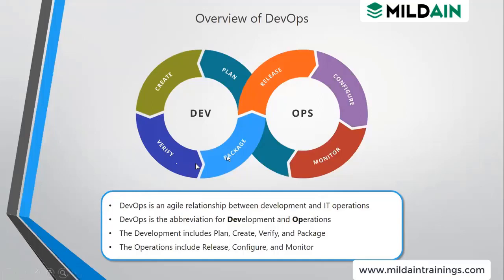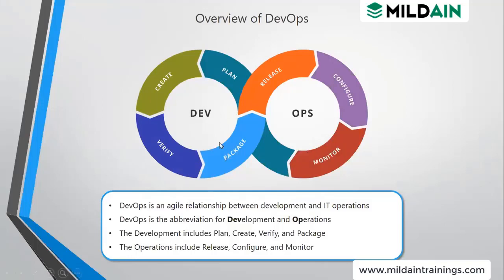These are not silos; we are in collaboration with each other. As soon as we plan and create, the ops team is involved from the stages of plan, create, verify, and package. If you face any issues in the release phase, it goes back to the team. It is a continuous process — we have continuous deliveries and continuous feedback given to the developer, so immediate feedback is there.